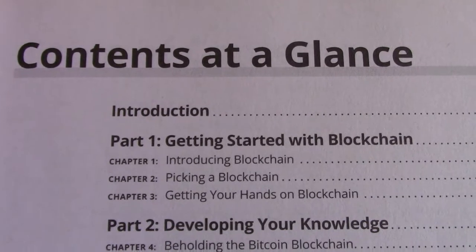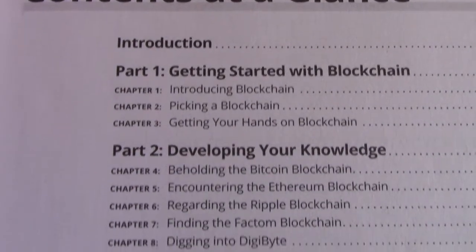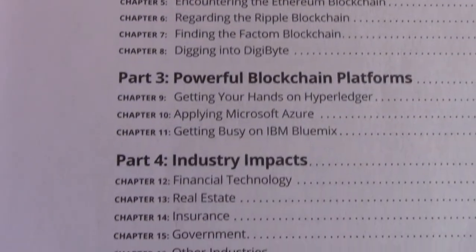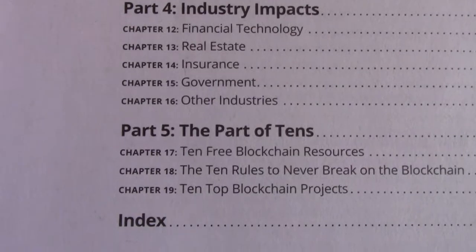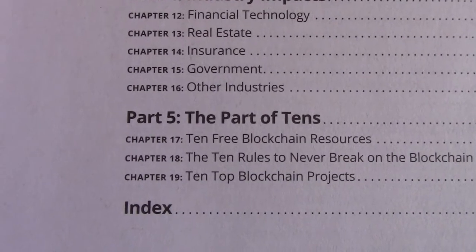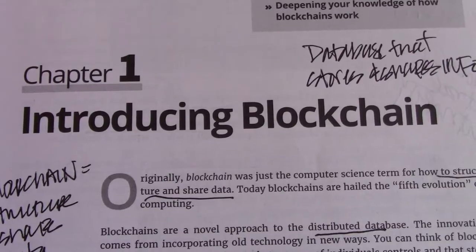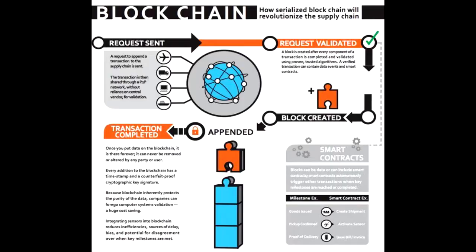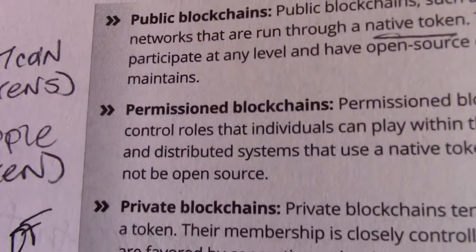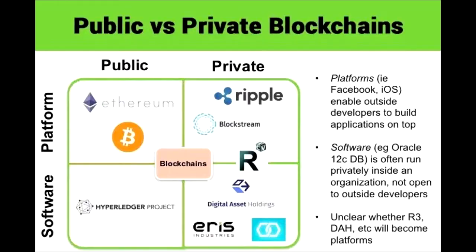Here's a quick look at contents at a glance. As you can see, the book is divided into five parts. Introducing blockchain. Beginning at the beginning — what blockchains are. There are public blockchains, permissioned blockchains, and private blockchains.